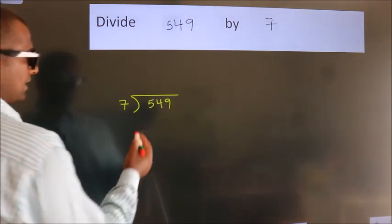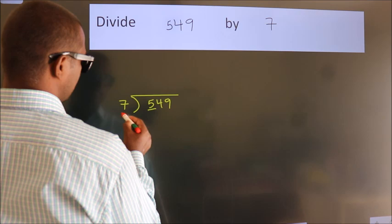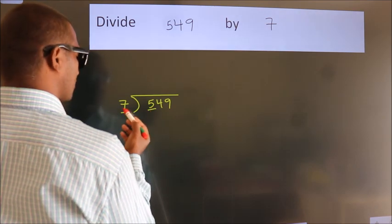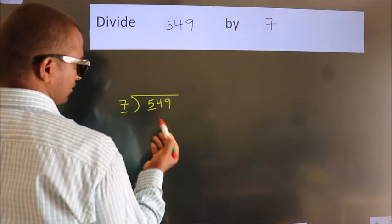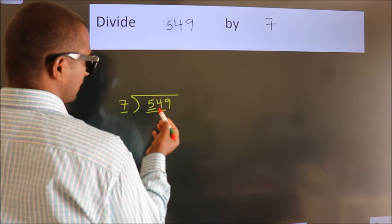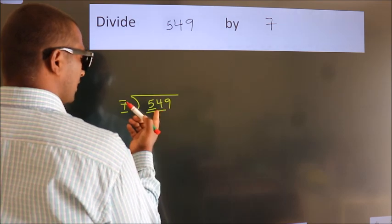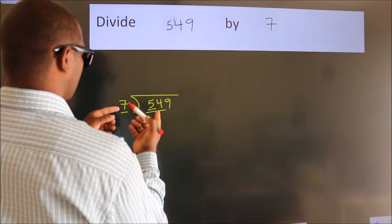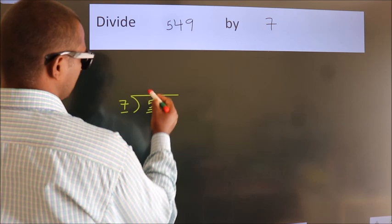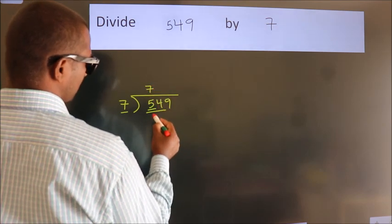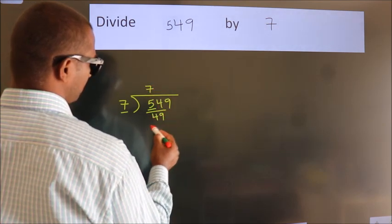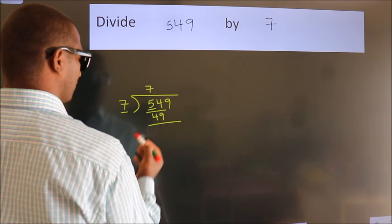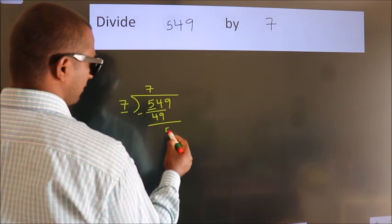Next. Here we have 5, here 7. 5 is smaller than 7, so we should take two numbers: 54. A number close to 54 in the 7 table is 7 times 7 equals 49. Now we should subtract. We get 5.